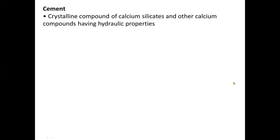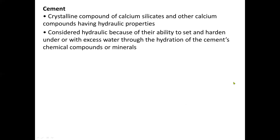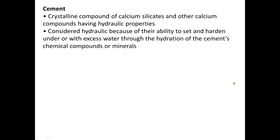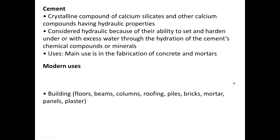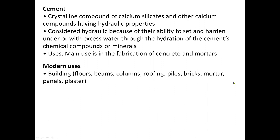For cement: it consists of crystalline compounds of calcium silicates and other calcium compounds having hydraulic properties. It is considered hydraulic because of its ability to set and harden in or with excess water through hydration of the cement's chemical compounds or minerals. Its main use is in the fabrication of concrete and mortars. Modern uses include building components such as floors, beams, columns, roofing, piles, bricks, mortar, panels, and plaster.